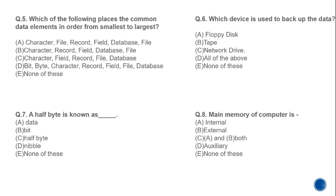MCQ 5: Which places the common data elements in order from smallest to largest? The correct order is: bit, byte, character, record, field, file, database. The correct answer is D.